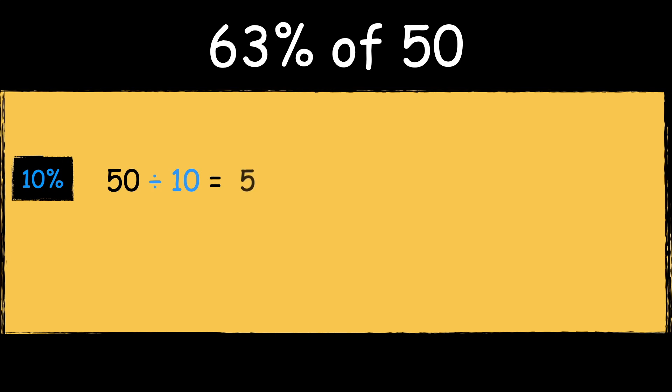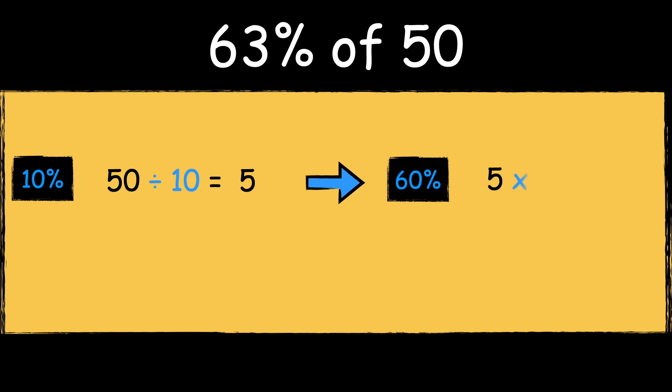Here's the next example: 63% of 50. First we work out 10% of the number by dividing it by 10. 50 divided by 10 is 5. Then we can multiply the answer by 6 to find 60%. 5 times 6 is 30.